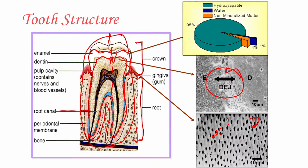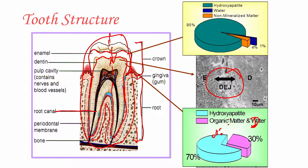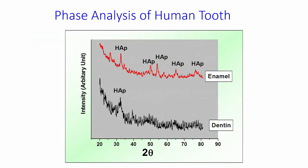In terms of composition, this natural tooth is largely hydroxyapatite — about 95% in the case of enamel, with a little bit of water and non-mineralized matter. In the case of dentine, it is 70% hydroxyapatite and 30% organic matter, such as proteins, with inorganic hydroxyapatite making up to 70%.